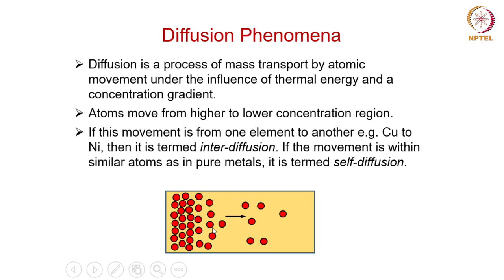On the left-hand side you can see there are more atoms, so this is the high concentration region, and on the right there are fewer atoms, so this is the low concentration region. The arrow indicates the direction of mass transport — it moves from the higher to the lower concentration region as indicated by this arrow.